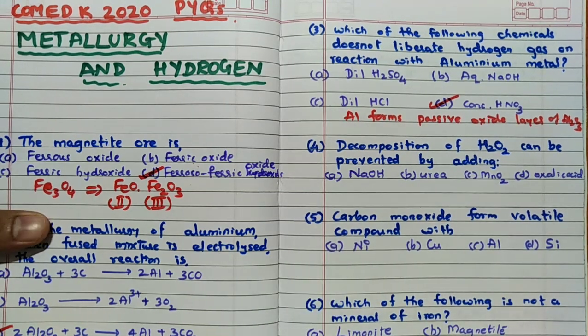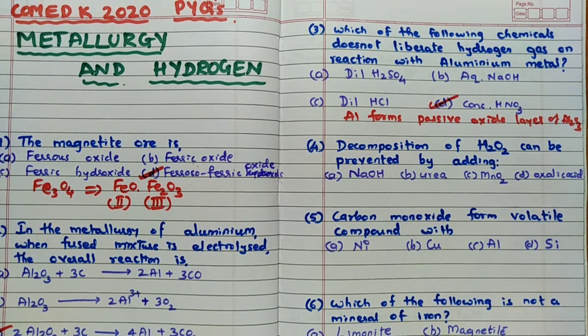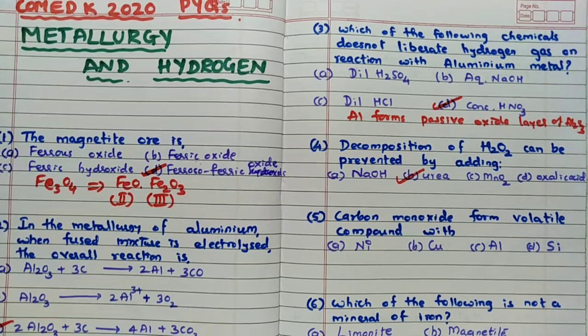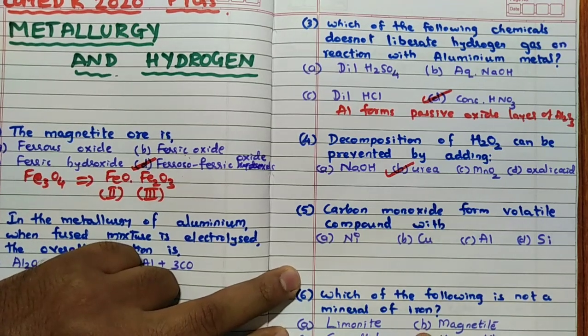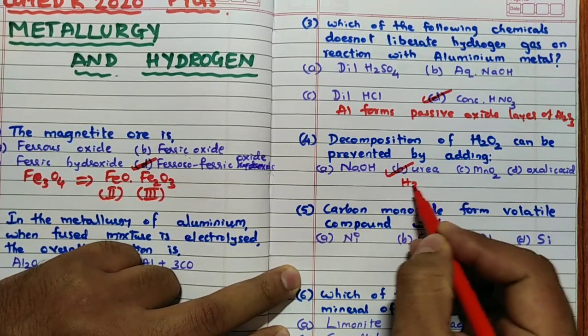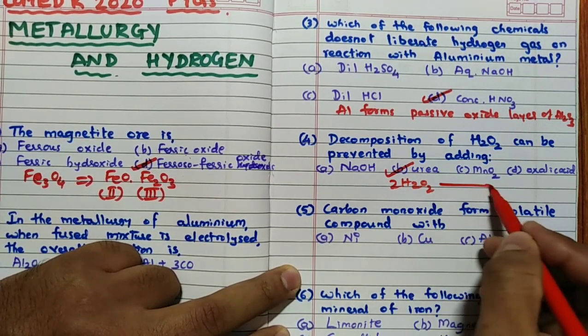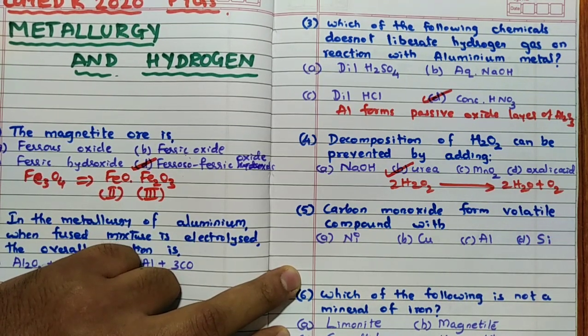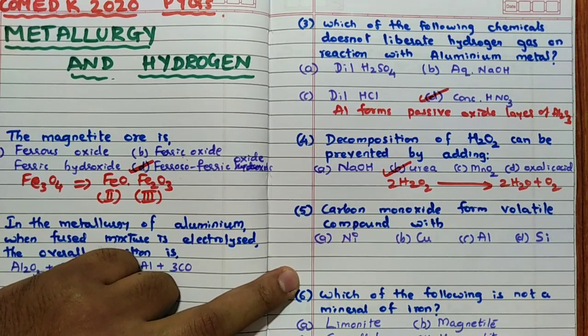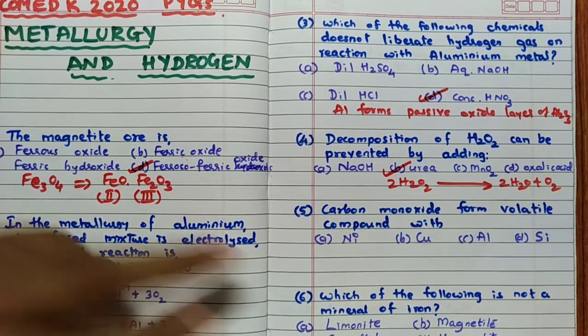Now decomposition of H2O2 can be prevented by adding, very important question remember, it is prevented by adding urea. It is given very clearly urea which is used to prevent the decomposition of H2O2. Generally H2O2 when it undergoes decomposition to form H2O and oxygen gas very easily. Hence remember to stop that you have to add urea.